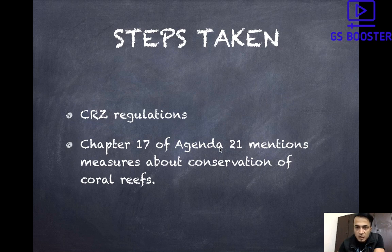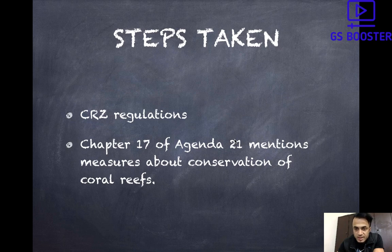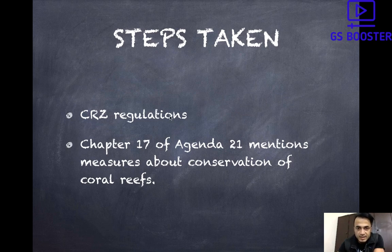Agenda 21 is also relevant. In 1992, an Earth Summit was held from which four important conventions emerged: one was CBD — Convention on Biological Diversity; second was UNFCCC — United Nations Framework Convention on Climate Change; third was Agenda 21, regarding sustainable development, where '21' denotes the 21st century; and the fourth was UNCCD — United Nations Convention to Combat Desertification. Chapter 17 of Agenda 21 comprehensively mentions measures for conservation of coral reefs. India has signed Agenda 21 and is a part of it. This is global-level action for coral conservation, while India's specific action is demarcating CRZ 4 under the Environment Protection Act.